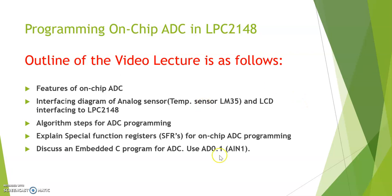Here we have to choose one of the analog channels to which we have connected one of the analog sensors, for example a temperature sensor. We have to convert those analog signals into their corresponding digital values by using the on-chip ADC, and we have to display those digital values on the LCD display.